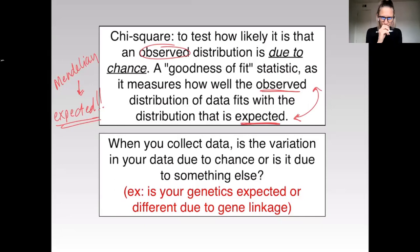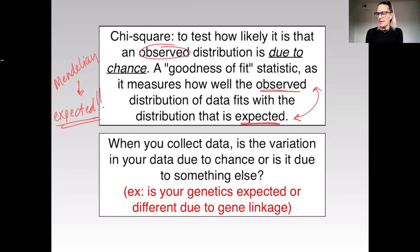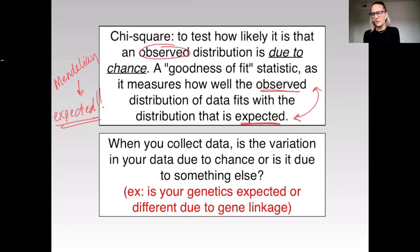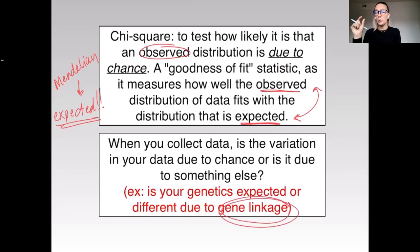When we collect data, is the variation in that data due to chance or is it due to something else? Is your genetics expected from Mendelian genetics from your Punnett squares, or is it different due to something else such as gene linkage, which we'll talk about later? Gene linkage is when genes are very close together on a single chromosome.